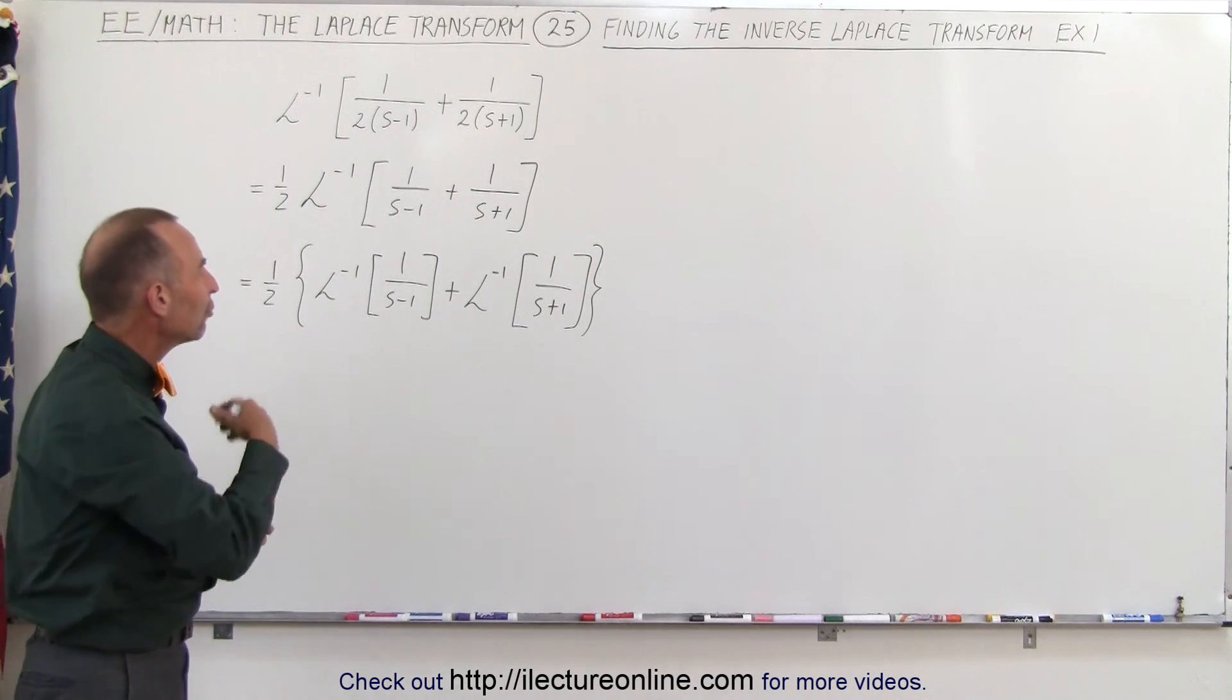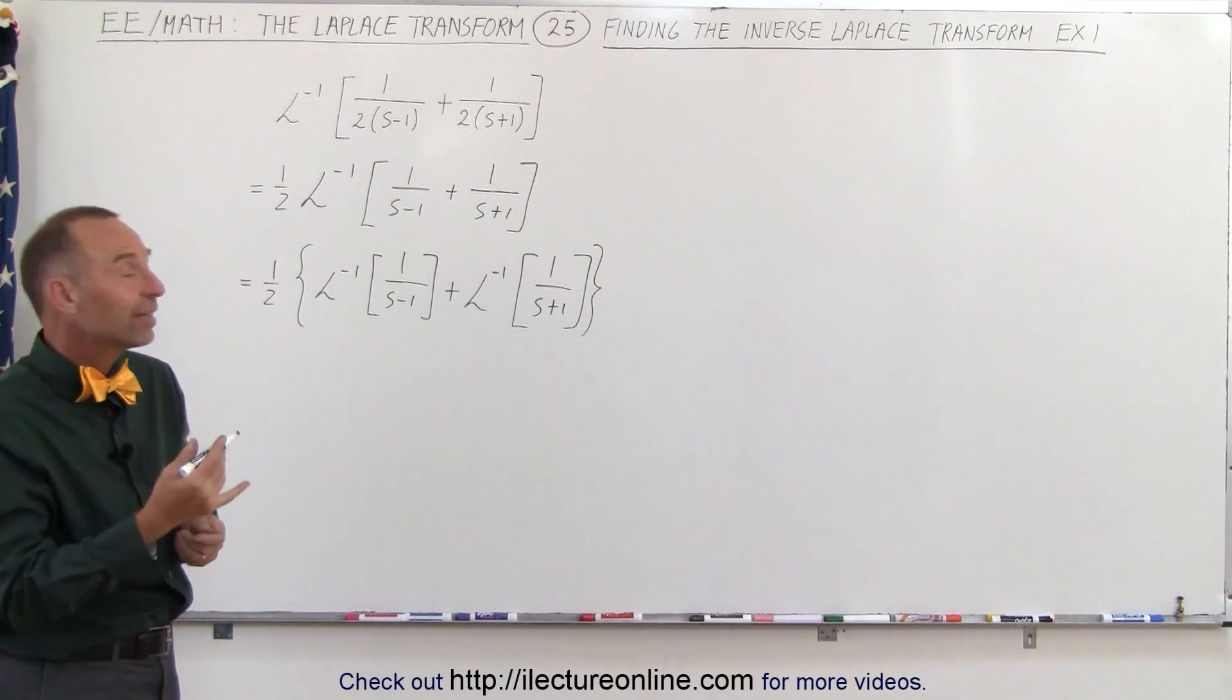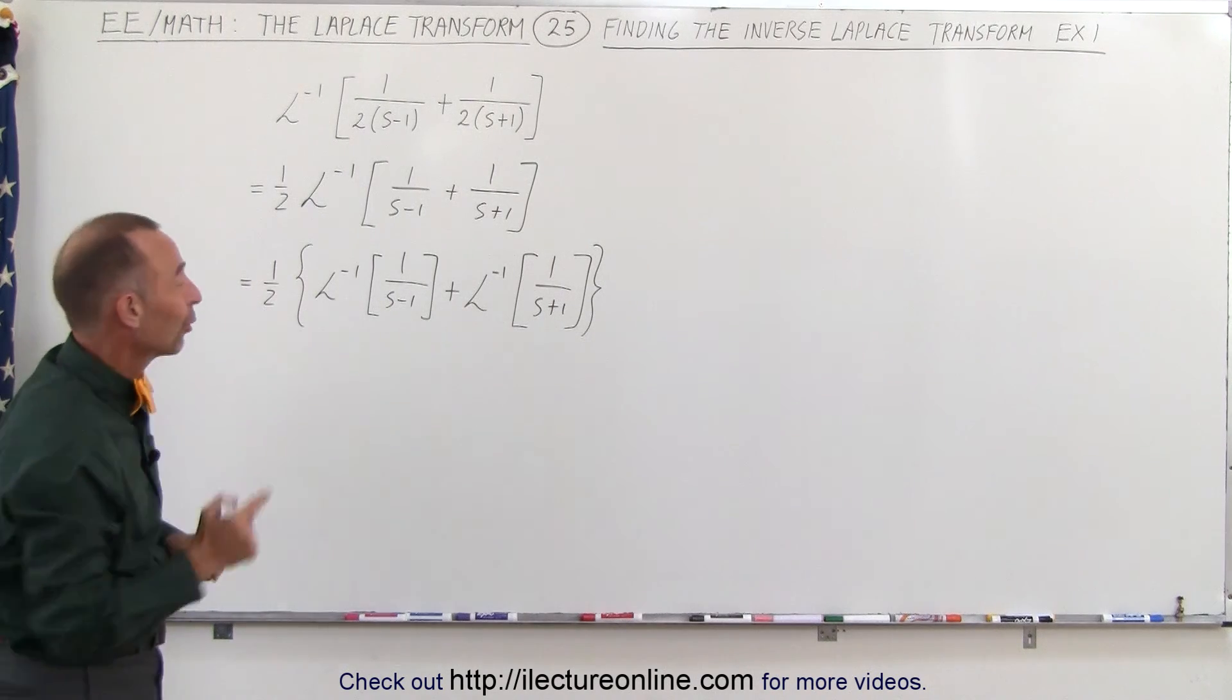which means we're going to have to multiply each one of those times e to the minus t and e to the plus t. Not in that order of course.